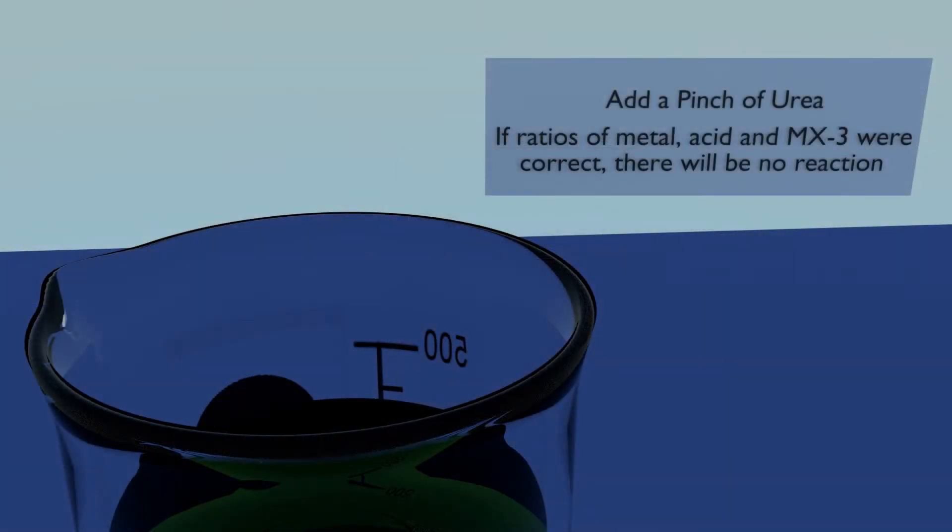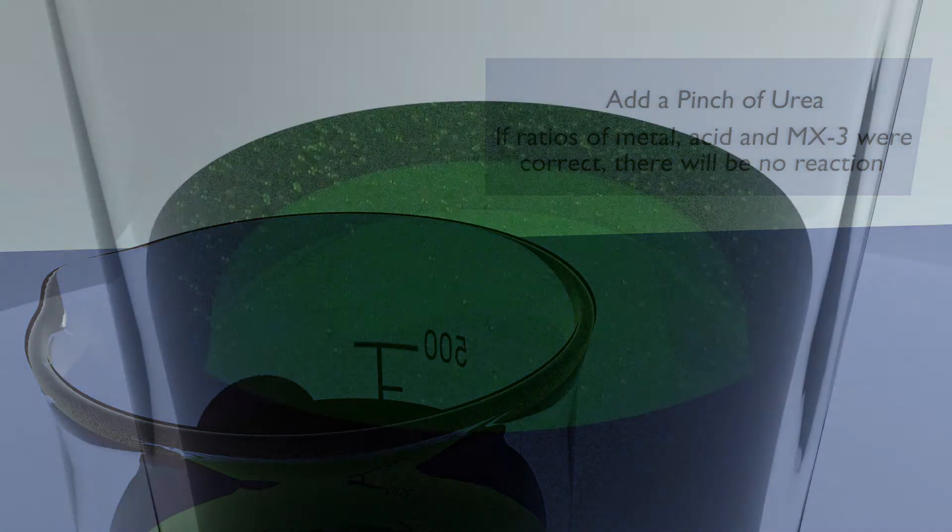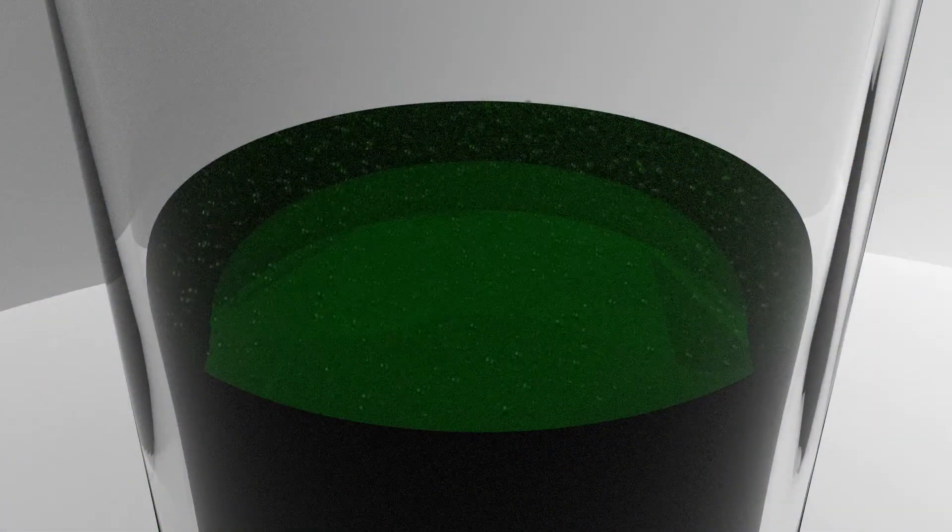Add a pinch of urea. If your ratios of metal, acid, and MX-3 were correct, there will be no reaction. However, if the urea fizzes, then slowly add more until there is no reaction.